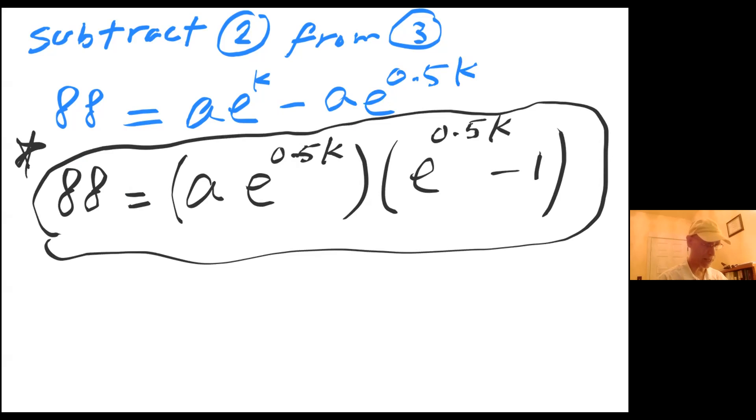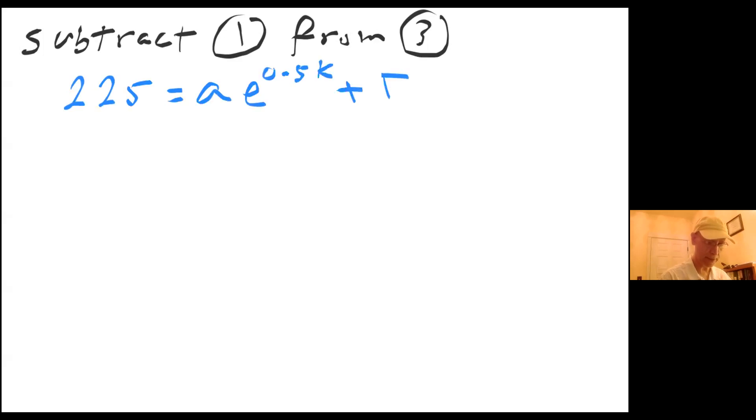Now I'm going to go ahead and use, since I do have two unknowns, A and k, I need another equation. So let me go to the next page. And this time I'm going to subtract equation one from equation three. So I have 225 equals A times e^(0.5k) plus T_s. That was my second equation. And the third one I had 65 equals A plus T_s.